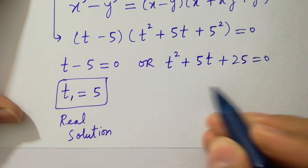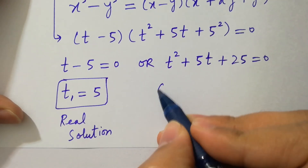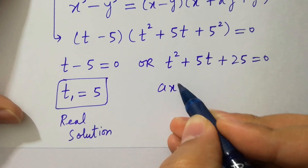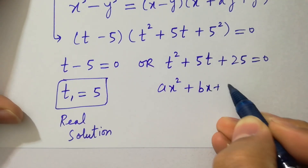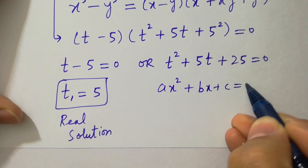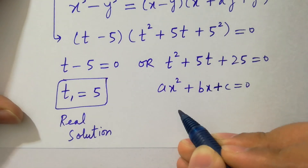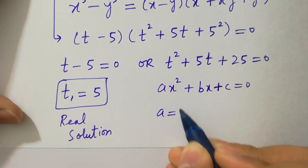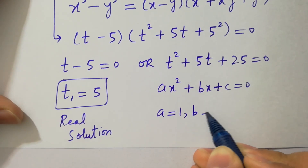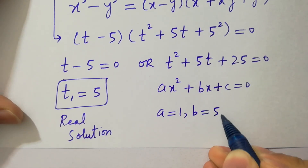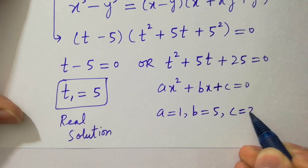Now this is our quadratic equation ax squared plus bx plus c equals 0. By comparing, a is equal to 1, b equal to 5, and c equal to 25.